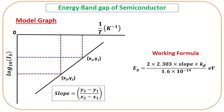Take two points exactly on the straight line and calculate the slope using the formula: slope = (y2 − y1) / (x2 − x1). The formula for the band gap energy Eg is: Eg = 2 × 2.303 × slope × Boltzmann constant kb, divided by 1.6 × 10⁻¹⁹. The result will be in electron volts. Substituting the values of kb and the calculated slope gives the band gap energy.